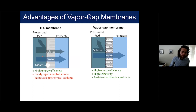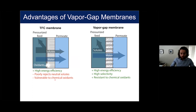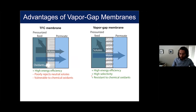To summarize: TFC membranes are really good in terms of energy efficiency and are widely implemented, but neutral solutes can pass through and they're vulnerable to chemical oxidants. The vapor gap membranes we're talking about today are also highly energy efficient — they share that advantage — but they have the potential to be highly selective and resistant to chemical oxidants. In the rest of this talk, we'll try to understand whether these potential benefits can actually be realized experimentally and whether we can develop a membrane that improves on conventional TFC membranes.